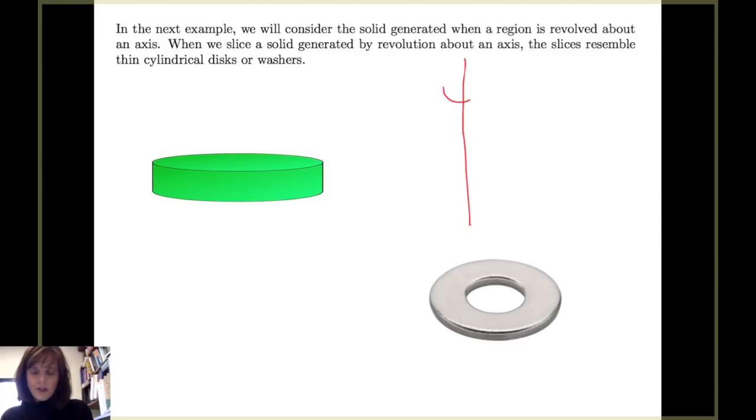Suppose I have an axis of revolution and I have a rectangle where one edge of the rectangle is bordered by the axis of revolution. This top edge will sweep out a circle as that rectangle is rotated about the axis of revolution. This bottom edge will also sweep out a circle that's parallel to the top. That forms the cross-section, and then I have a thickness.